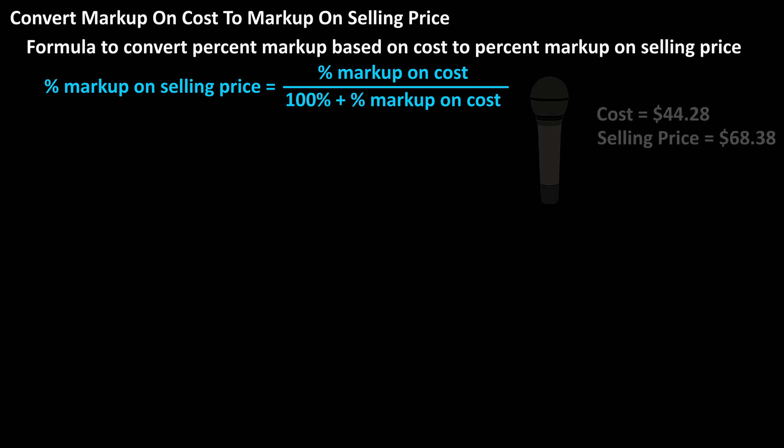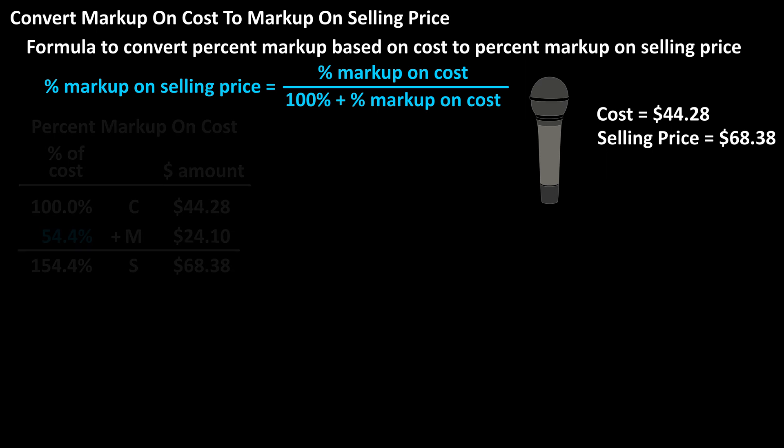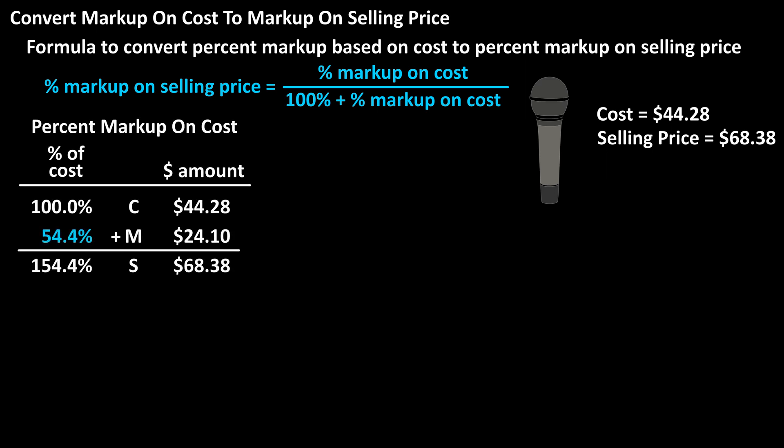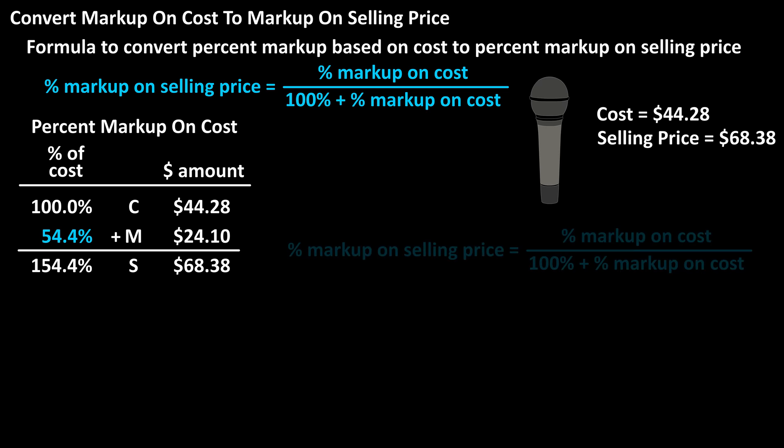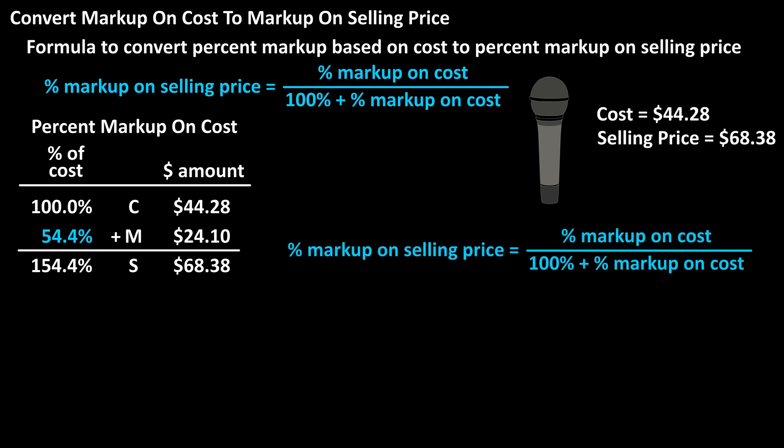As an example, here is the data for a microphone that a retailer is selling. The percent markup on cost has been calculated and put in a table. You can see that the percent markup on cost is 54.4%. Now let's convert this to percent markup based on selling price.